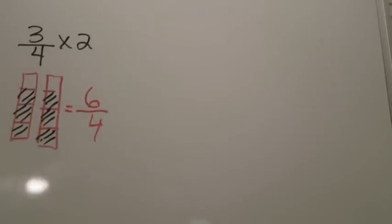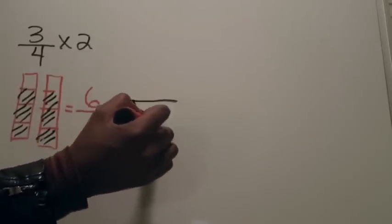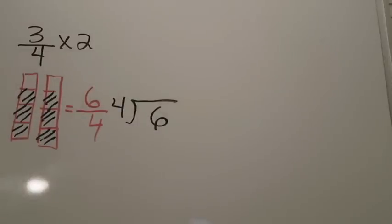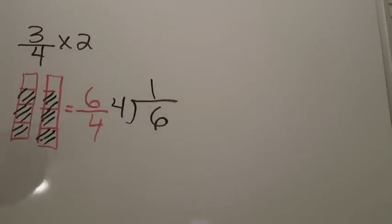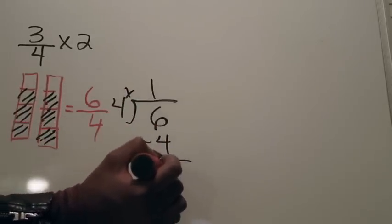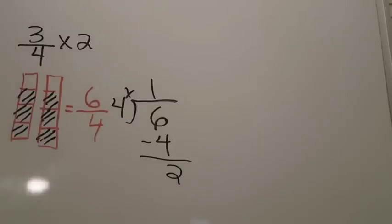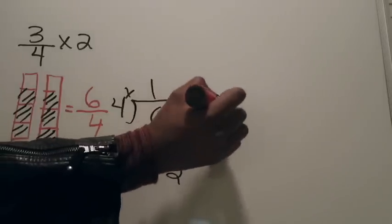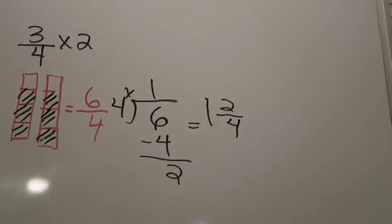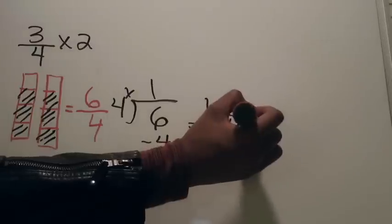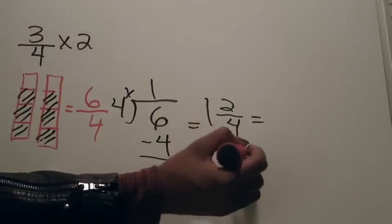Going back to what we learned in chapter six, I cannot leave my answer as 6/4 because that is an improper fraction. So I turn it on its side and divide: 6 ÷ 4. Four goes into six one time; one times four is four; six minus four is two. That gives me 1 and 2/4. Since both two and four are even, that fractional part is not in simplest form. The greatest common factor between two and four is two, so my final answer is 1 and 1/2.